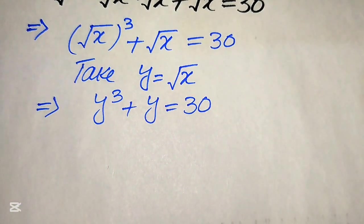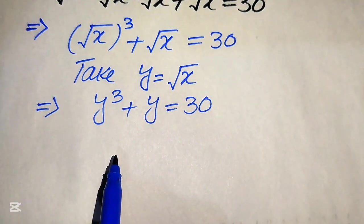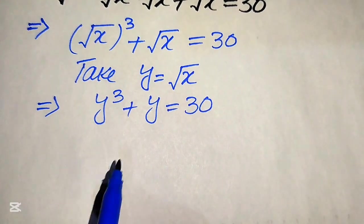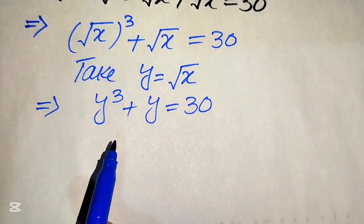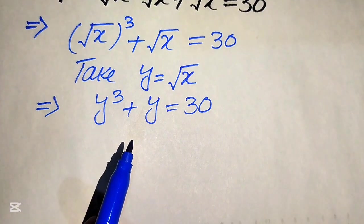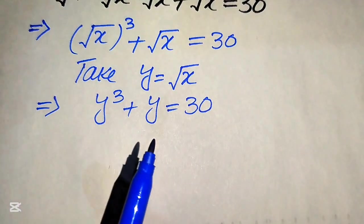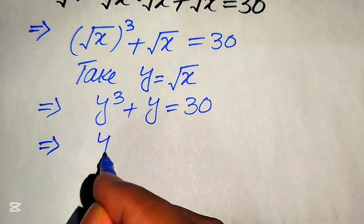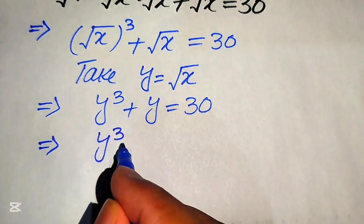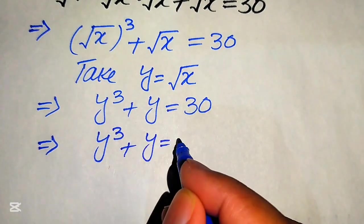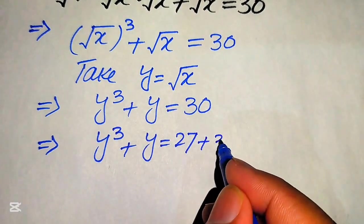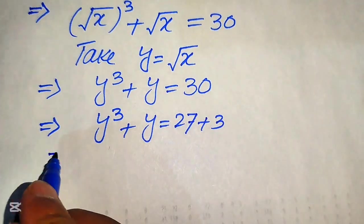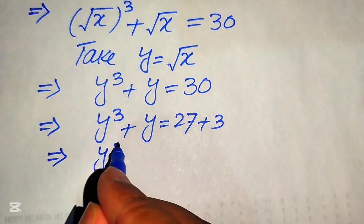Our first target is to find the values of y, then move backward to find x. To solve this cubic equation, we focus on the right-hand side and break 30 as 27 + 3, then write the right-hand side in point-factors form.